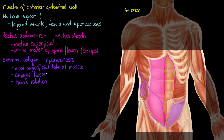We have the external obliques on both sides, as opposed to our rectus abdominis which sits in the middle. If we were to flex just one external oblique, it's going to aid our back muscles in trunk rotation — so rotating your core. And if we activate both of those muscles at the same time, it's going to help our rectus abdominis in spine flexion, so it also helps when you're doing sit-ups.